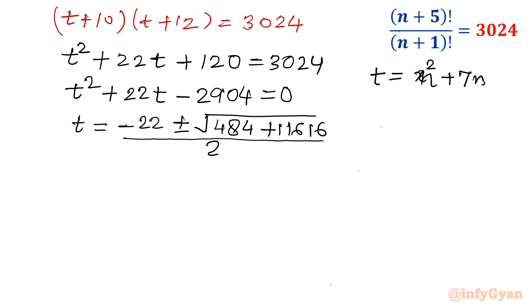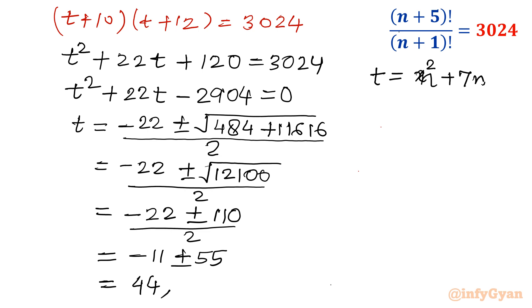Now 11616 plus 484, that is a very lucky number for us because that will generate a root-free value. So 12100. We know that the square root of 121 is 11 and of 100 is 10. So plus minus 110 over 2 equals minus 11 plus minus 55. If I consider the plus sign, then 55 minus 11 is 44. And minus sign, then minus 66.